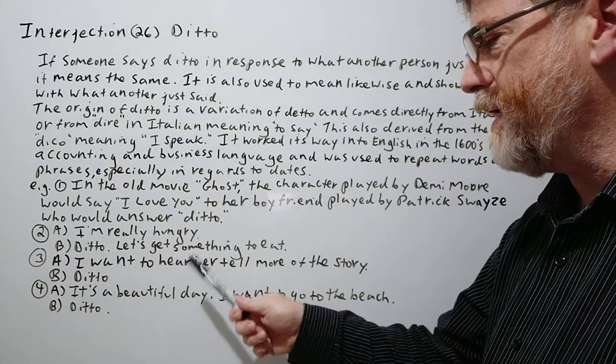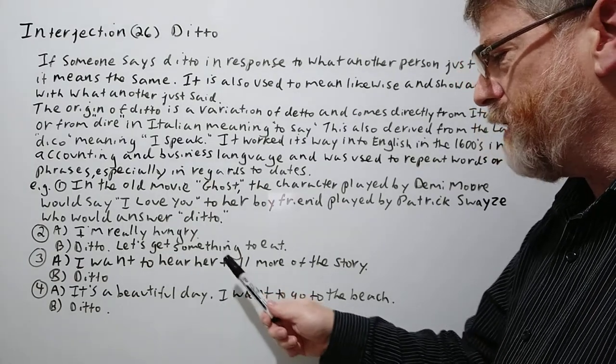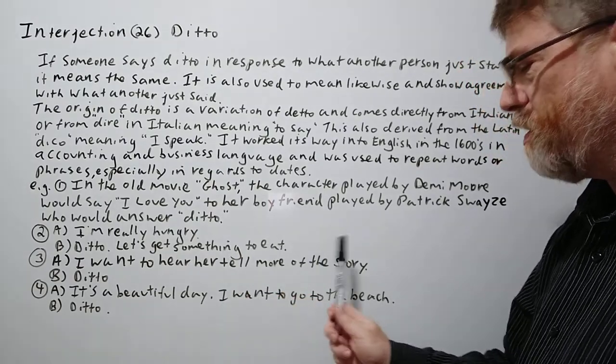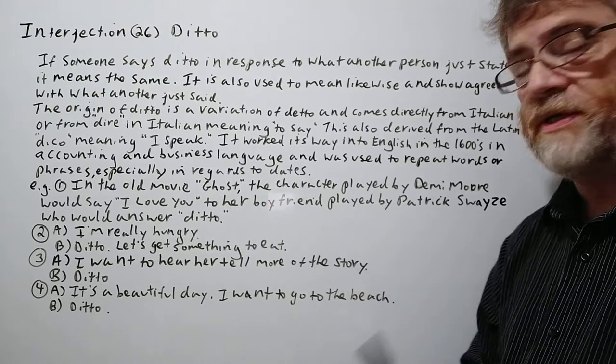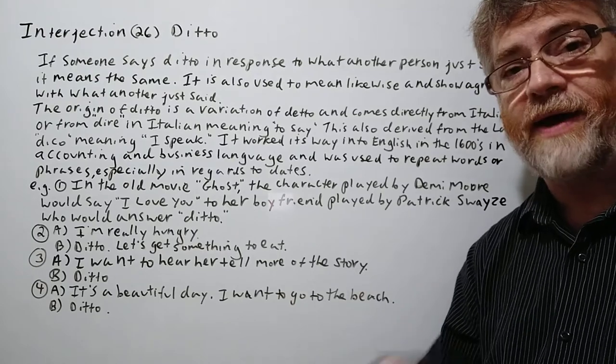Number three: A says 'I want to hear her tell more of the story.' B says 'Ditto,' meaning 'yeah, come on, let's encourage her to tell more of the story.'